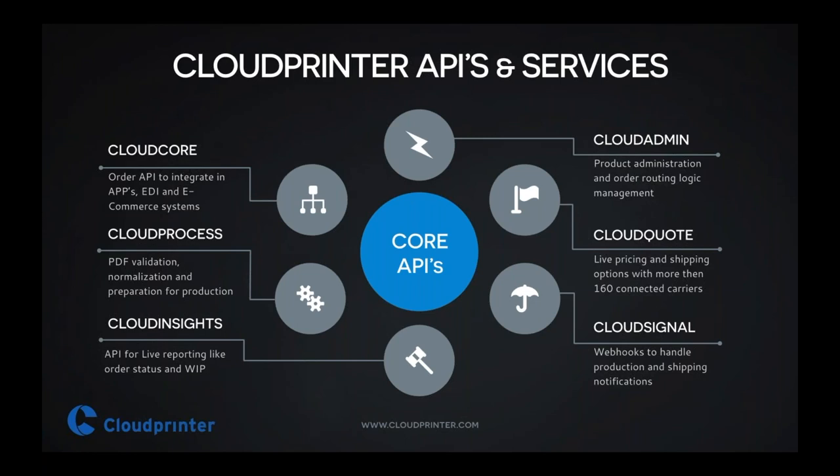That is correct. And then Cloud Signal — those are basically the webhooks that can trigger, let's say, an email to my customer that the order is being received, or is being printed, or is now in the finishing department, or is being shipped. That can trigger events on the customer's side, right? That is correct. And it also includes the tracking number once the order is shipped.